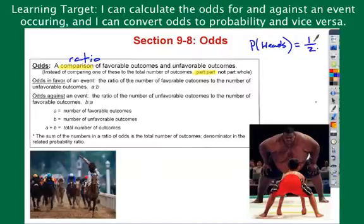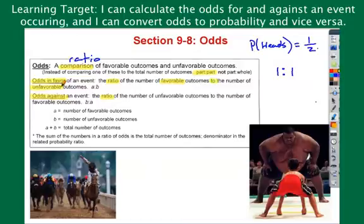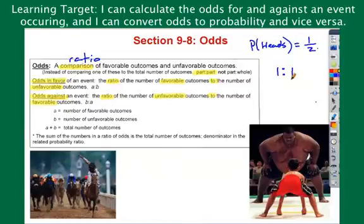Odds is a little bit different. If you do the odds of flipping heads, a lot of people say probability and odds are the same thing — no. Odds of flipping heads is one to one. Odds in favor is a ratio of favorable to unfavorable. There is one way to get a head and one tail. One to one would be the odds in favor of flipping heads.